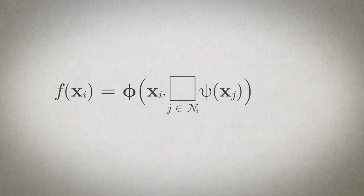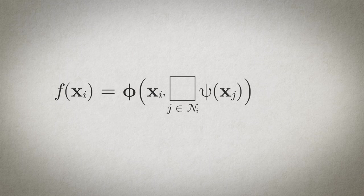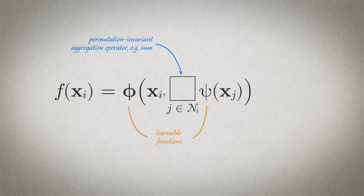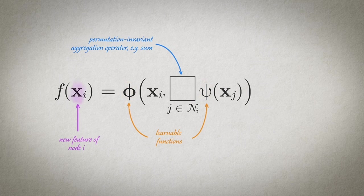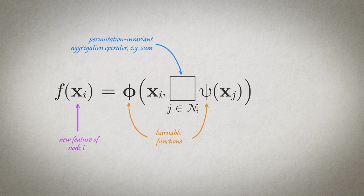So here is a typical way the local aggregation function looks like in graph neural networks. We have our permutation invariant aggregation operator such as sum or maximum. A learnable function psi that transforms the neighbor features and another function phi that updates the features of node i using the aggregated features of its neighbors. There are lots of nuances on how to design each of these components and this is a very active research topic in deep learning on graphs but fortunately most architectures fall into one of the following three flavors.